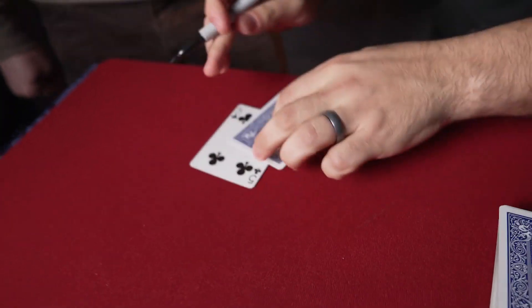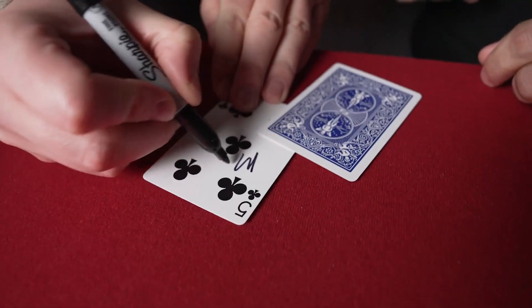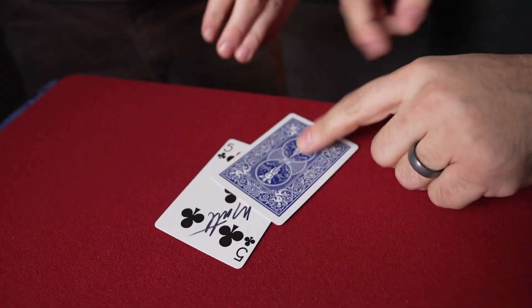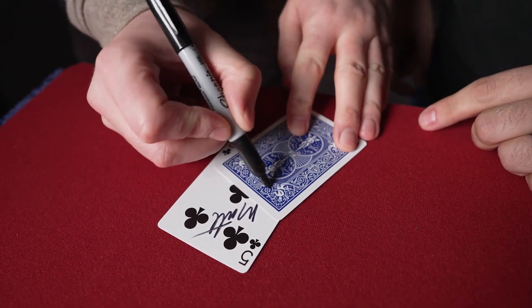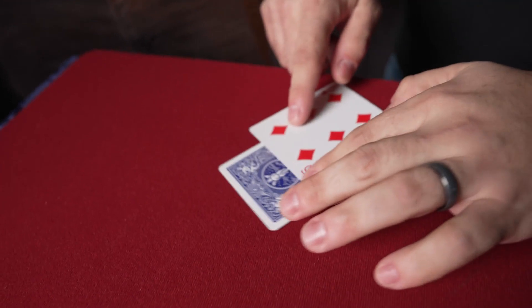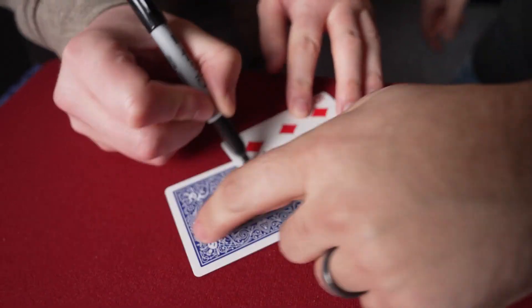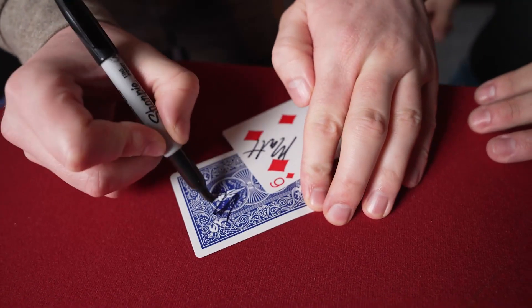So can you go ahead and sign that five? This one? Yep. Perfect. And then sign the back of the six. Oh, look at that. You've done this before. And then can you sign the front of the six now and then the back of the five? Okay.